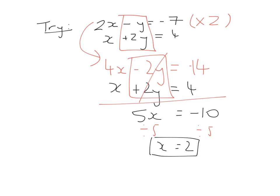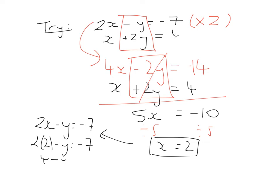Now substituting x equals two into the equation two x minus y equals minus seven: two times two minus y equals minus seven, so four minus y equals minus seven. Minus four from both sides gives minus y equals minus eleven, therefore y equals eleven.